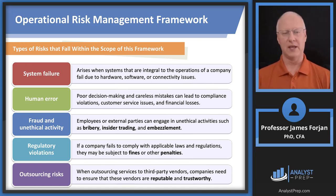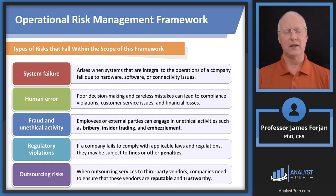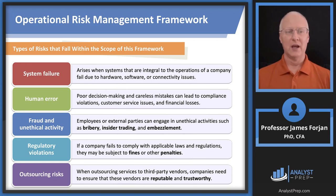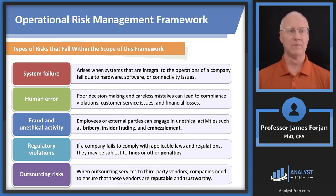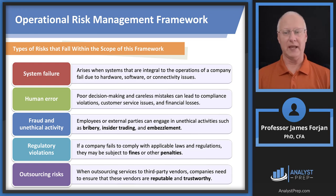Human error happens all the time. Fraud and unethical activity — good systems of corporate governance mean that when you have integrity in small things, you have integrity in big things. Sooner or later you'll have to make an ethical decision and show integrity — you might as well start right now. Fraud and unethical activity will be a part of this operational risk management framework no matter what. We also have regulatory violations, and then outsourcing risks — a great example is the futures exchange where you have a separate contract written with a clearing house, meaning the short and long positions don't have to track each other down to exchange gains and losses.